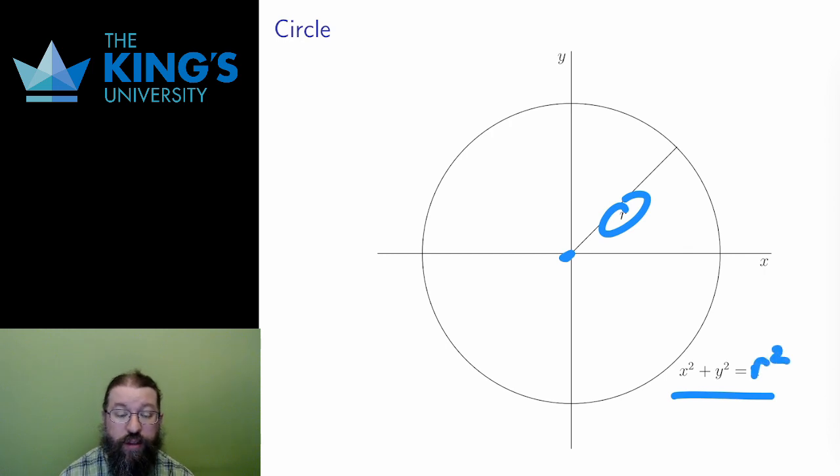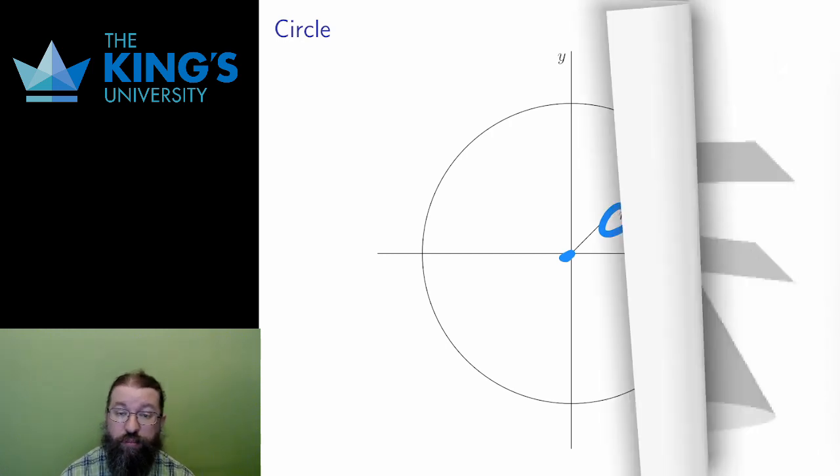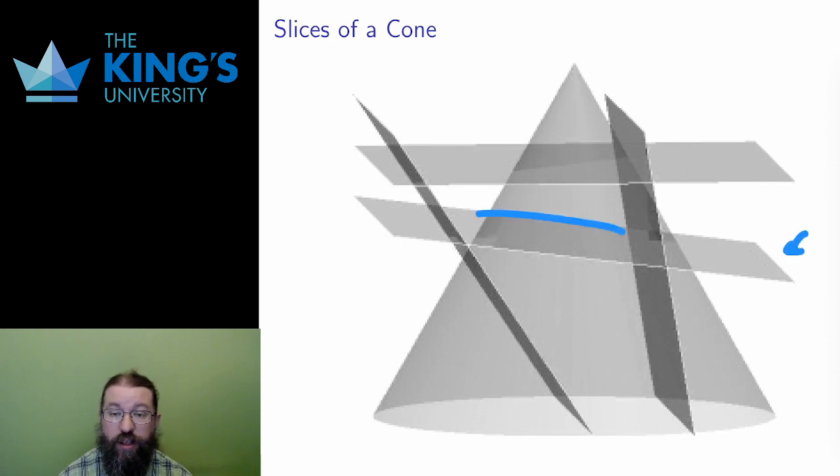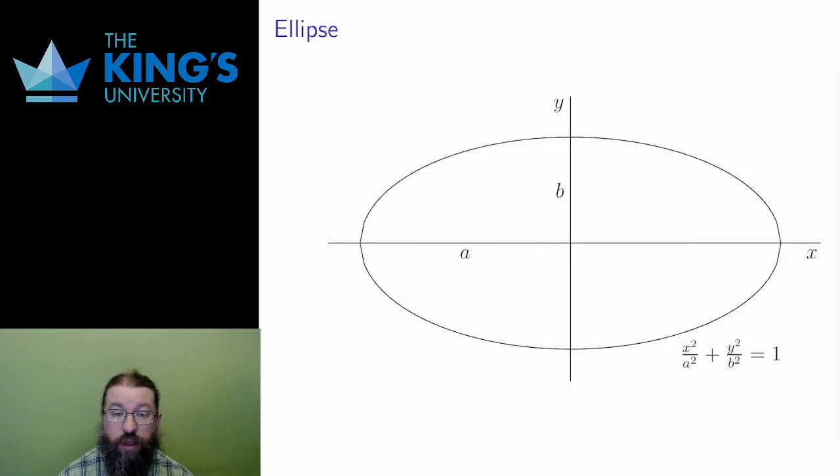The second conic is the ellipse. As a slice, it's a slightly tilted slice, as you can see by this slice in the diagram. Intrinsically, an ellipse is similar to a circle, but instead of a single radius, the distance from the center varies.